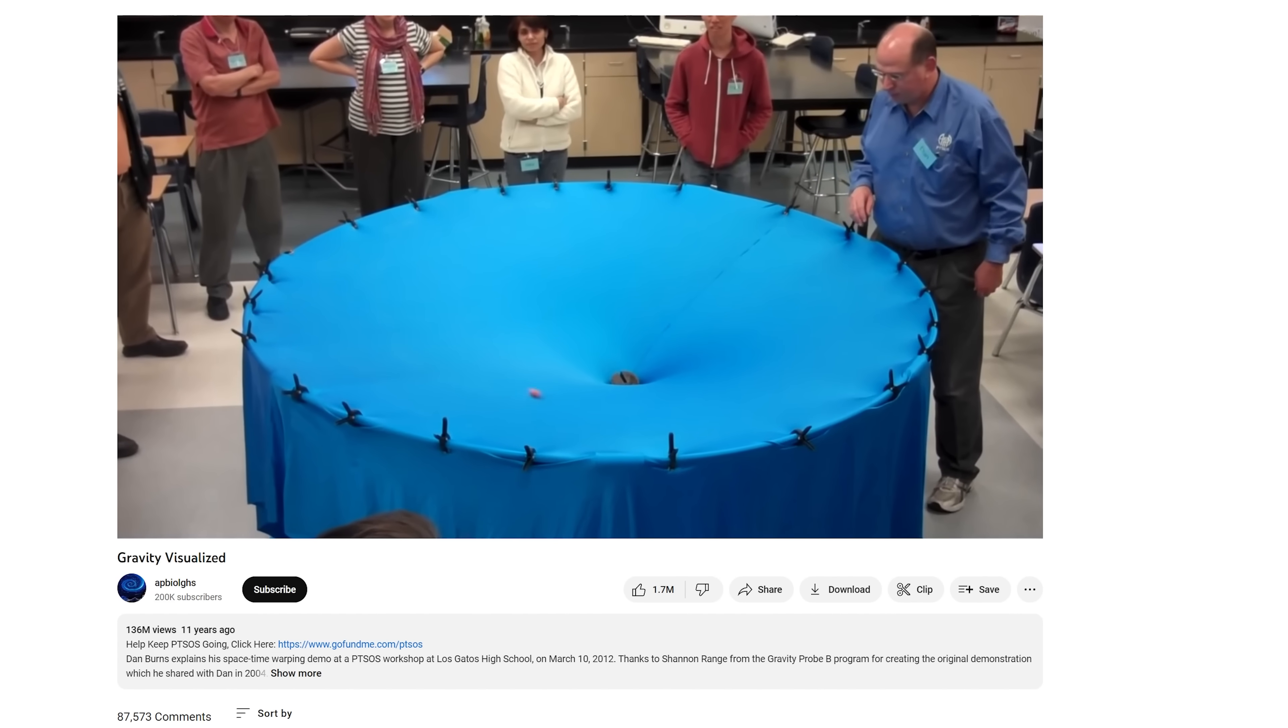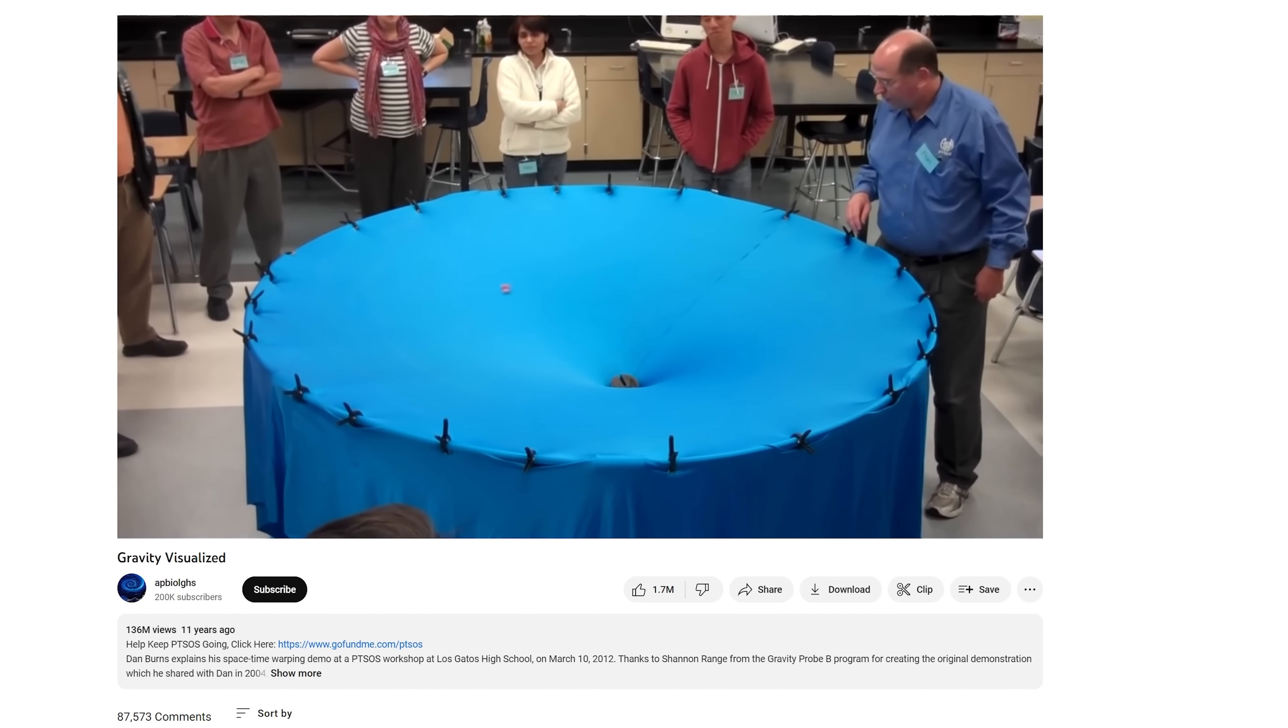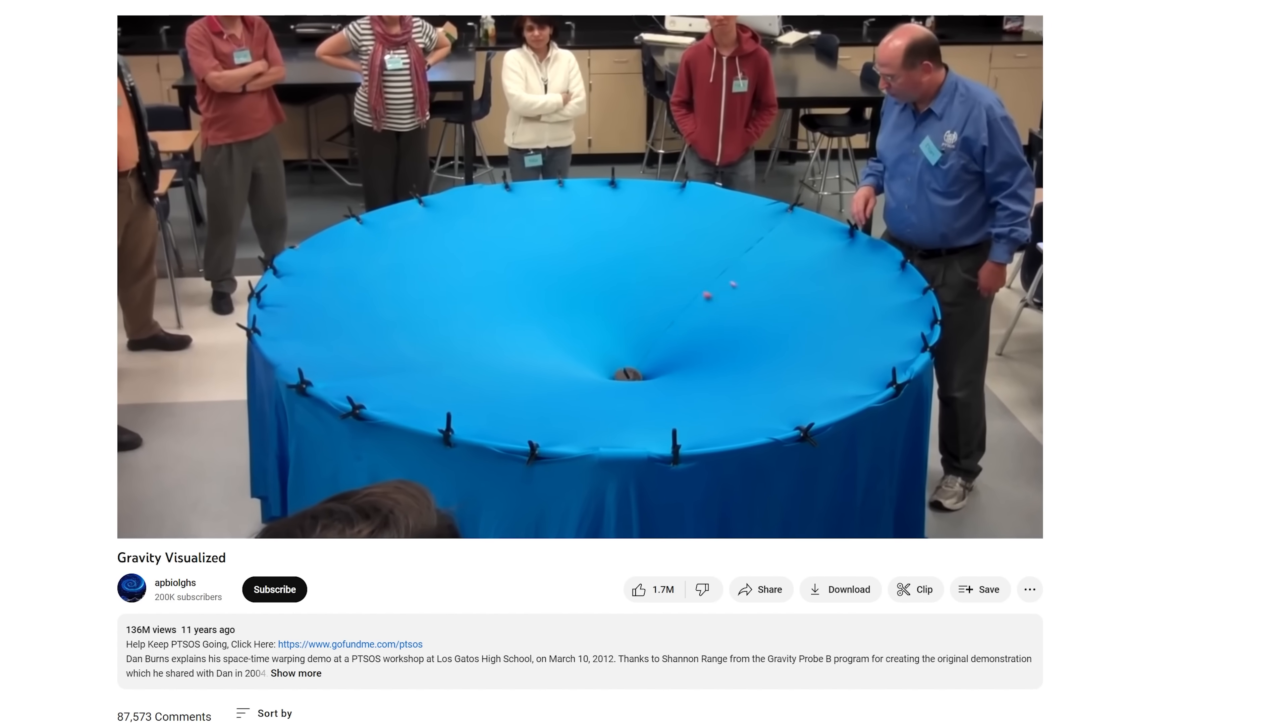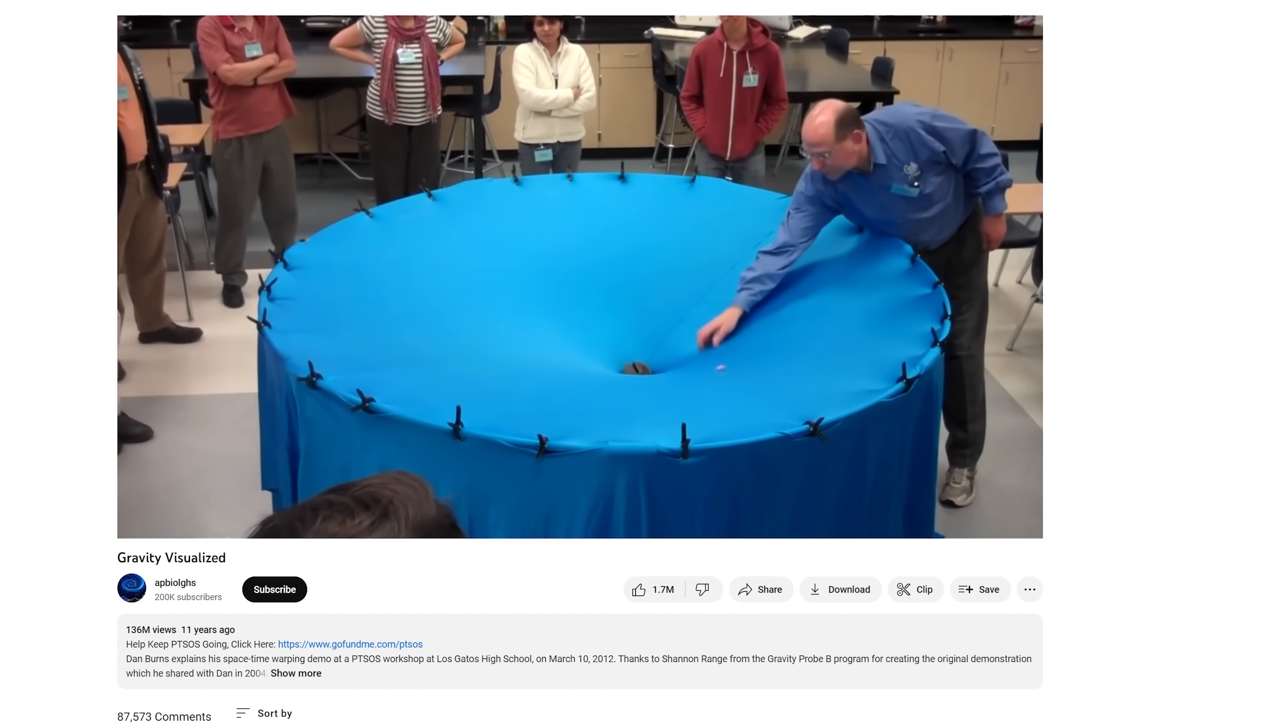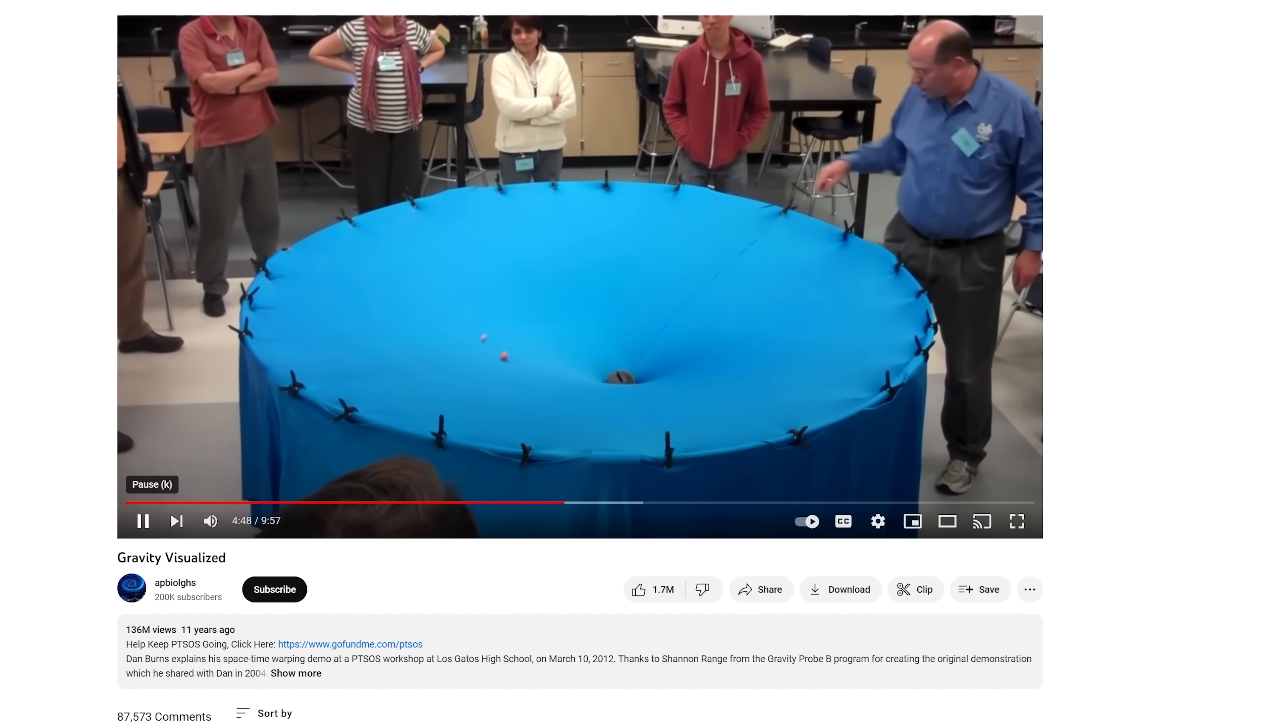But wait, if space-time bends, does that mean it's bending into a higher dimension like we saw here? For example, we've all seen the example of bending space-time when they show planets orbiting on a stretchy fabric. And you can see that the fabric is bending off the plane of the fabric into the third dimension. But is that what's actually happening when space-time bends? Is our third dimension bending into a higher fourth dimension that contains the universe?